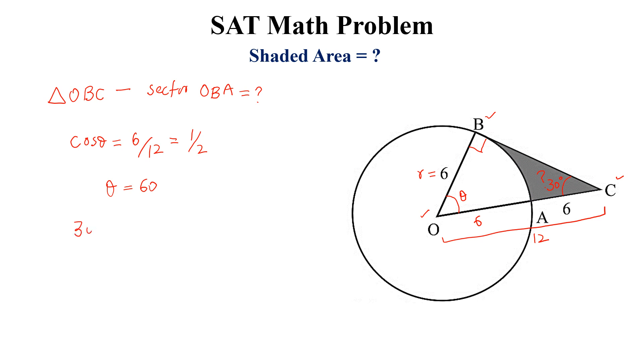If this is 30 degrees, then we know that in a 30-60-90 degree triangle, if this is r, this will be 2r, and this will be √3 times r. So this length will be 6√3.